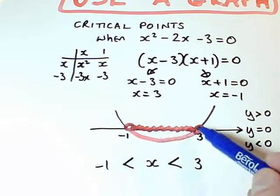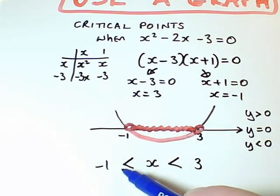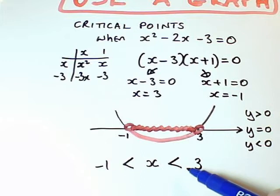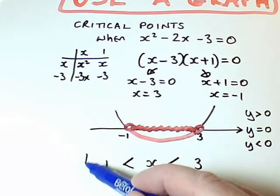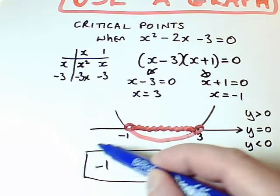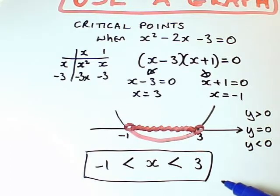Or, if these were filled in circles, if I was allowed to be at the edges, these would be less than or equal to signs. So this is my answer. And that's what happens when we want the middle section of the graph, and it's just one range.